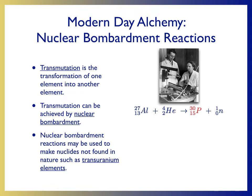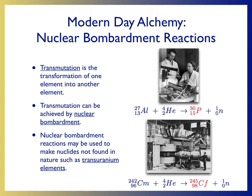These other elements have to be made synthetically through nuclear bombardment reactions. For example, in 1950, Professor Seaborg at the University of California, Berkeley, created californium by bombarding curium-242 with alpha particles to produce californium and a neutron. Again, these are synthetic ways of causing nuclear transformations.